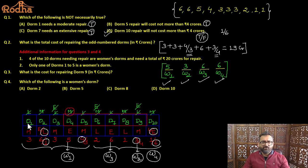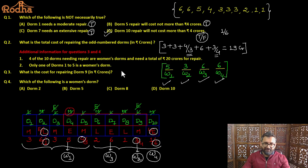What is the cost of repairing DOM number 9? We uniquely determined the repairing cost of DOM 9, which is 3 crores.